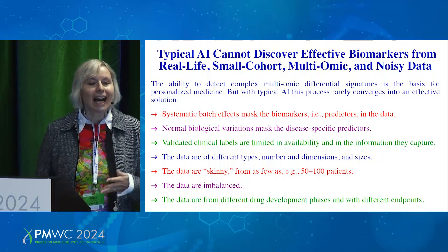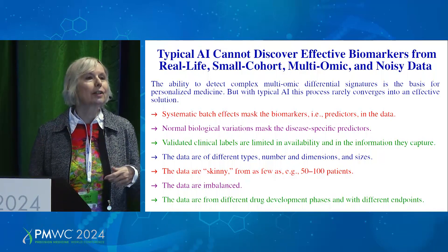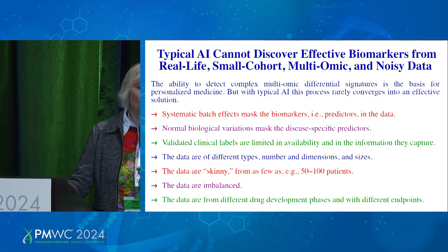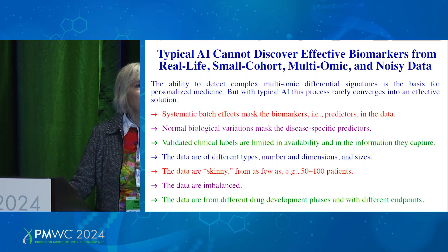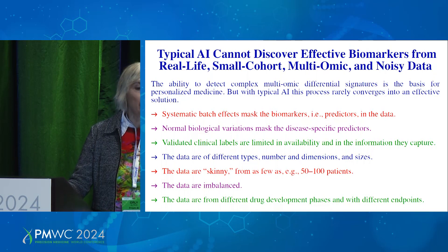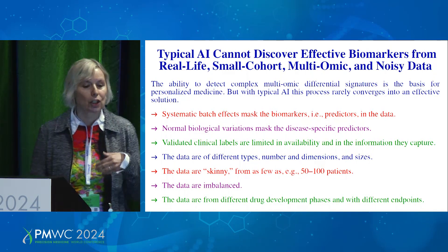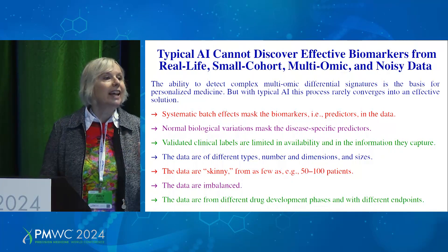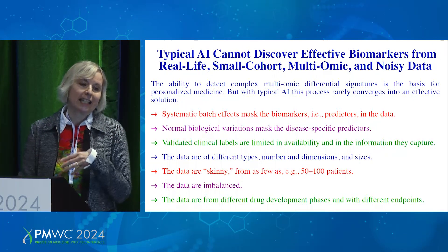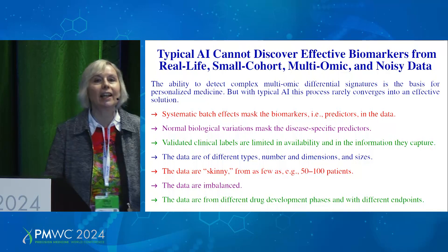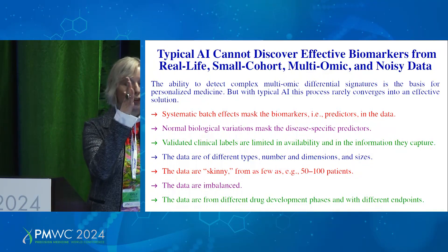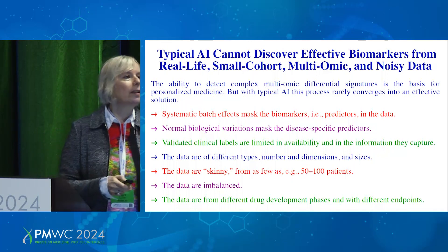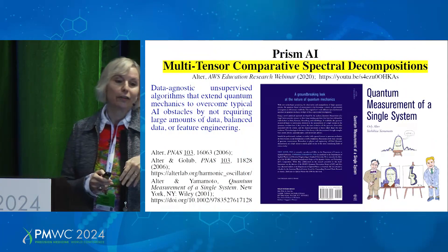This is because typical AI cannot discover effective biomarkers from real-life clinical data. The data come from small cohorts, they are noisy, there are systematic batch effects and normal variations that mask the biomarkers — or in AI language, the predictors. Clinical labels are rarely available when you want them. The data are complex in structure, and as I mentioned, small cohorts — meaning skinny. We have very many features and few patients. Skinny data also means imbalanced. And the data come from all different stages in the drug development process.